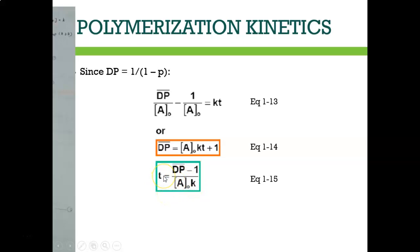In exam questions, they will give this equation and ask you to derive the equation given, such as Dp equals A0Kt plus 1. If this equation represents the catalyzed condensation kinetic polycondensation type 1.